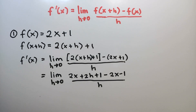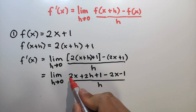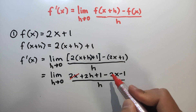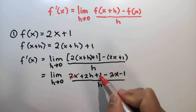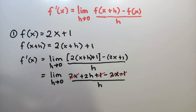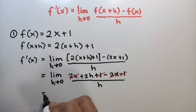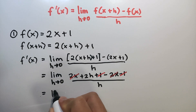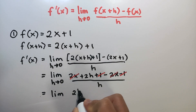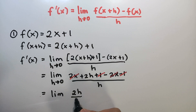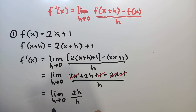Next is to simplify the numerator — we'll combine like terms. So 2x minus 2x is 0, and 1 minus 1 is 0, so we have 2h in the numerator. This is equal to the limit of 2h over h as h approaches 0.